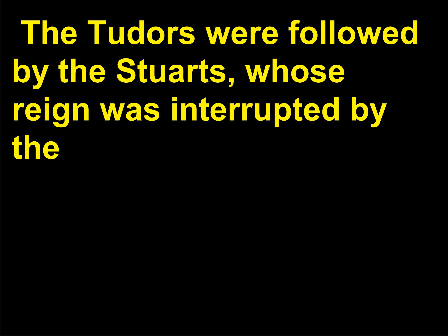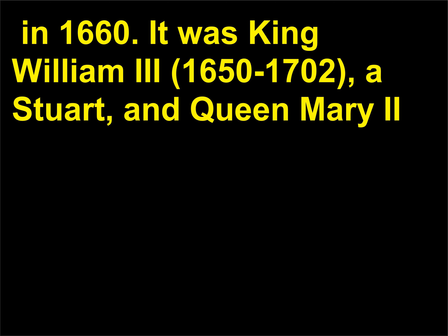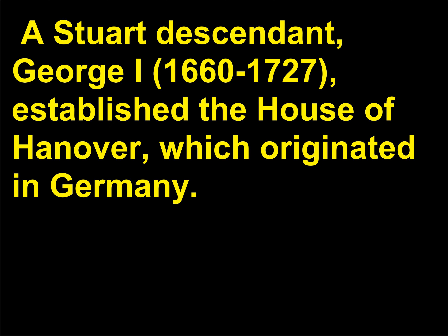The Tudors were followed by the Stuarts, whose reign was interrupted by the establishment of the Commonwealth and Protectorate under Oliver Cromwell, 1599–1658. The house was restored to power, giving history the eight-year period known as the Restoration, in 1660. It was King William III, 1650–1702, a Stuart, and Queen Mary II, 1662–1694, who began in 1689 to rule England in a more modern fashion through Parliament. A Stuart descendant, George I, 1660–1727, established the House of Hanover, which originated in Germany.